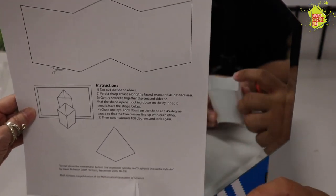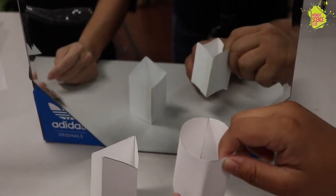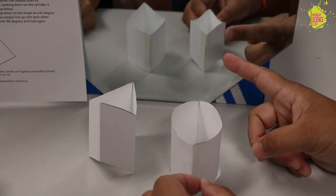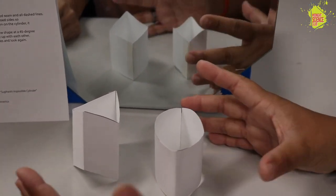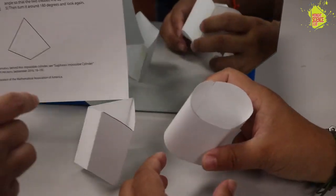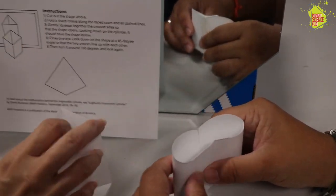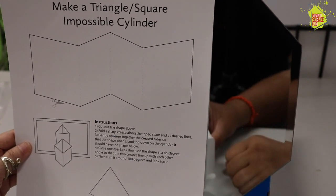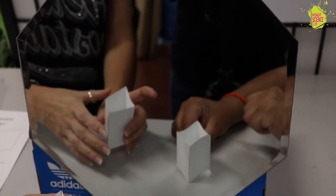They call it impossible cylinder, so they have different shapes that'll create and they look like one shape in real life and they look like a completely different shape in the mirror. Yes, it's an illusion. So this is awesome, so this one right here that I got is actually the triangle.